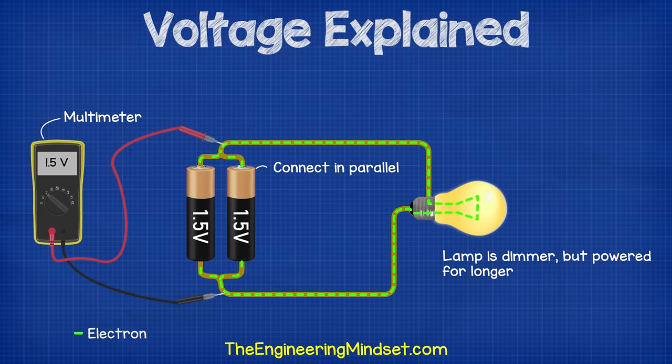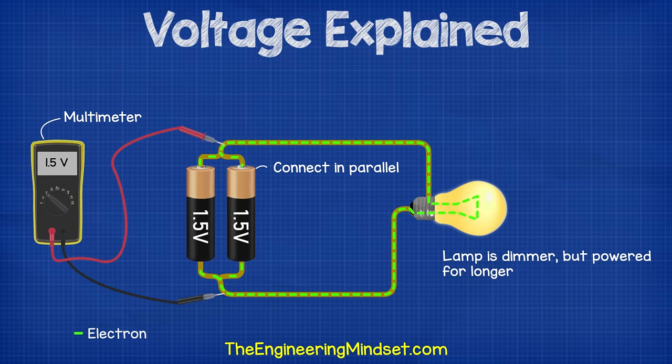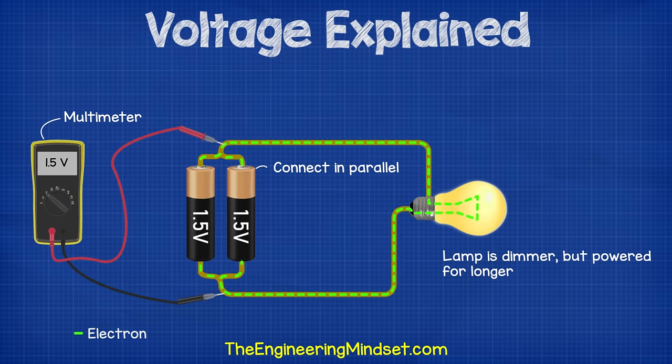However, if we were to move the battery and connect it in parallel, then the path of the electron splits. Some will flow to the first battery and some will flow to the second battery. Therefore, the batteries will both provide the same amount of energy so the voltage isn't combined. The voltage isn't boosted and we only get 1.5 volts. So the workload is split by the batteries and the lamp will be powered for longer, but it will be dimmer.